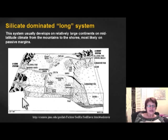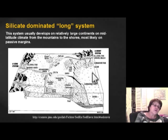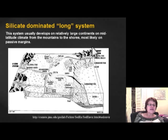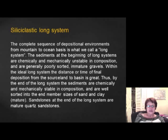The siliciclastic long system — the eastern United States is a good example. Mountains serve as the sediment source, rivers carry the sediment via meandering channels to the shoreline, and they deposit quartz-dominated sediment into the ocean, like the Atlantic on the eastern coast. If mountains are closer to the beach, sediments are more immature, but in a long system, by the time sediment reaches the beach it's mostly quartz — mature sediment.